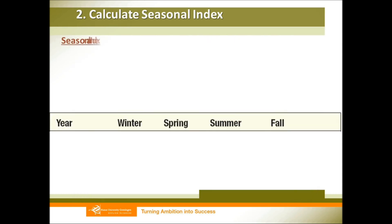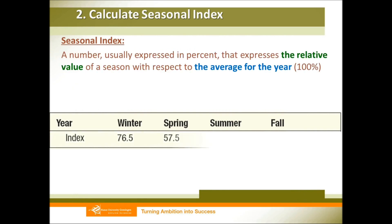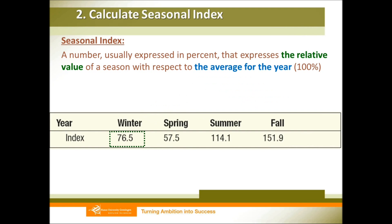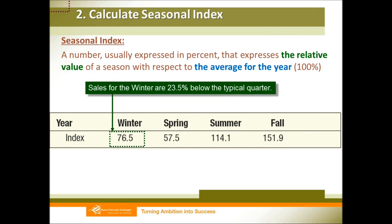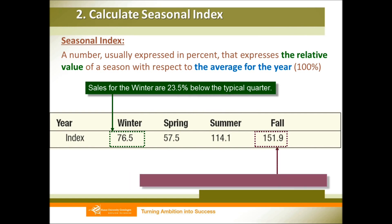If we want to interpret these patterns, we use percentage numbers or sometimes decimal numbers. For example, if we want to interpret our winter index, that means in winter our sales will be 23.5 percent lower than the typical or average quarter. And in autumn, our sales will be 51.9 percent above the typical or average quarter.